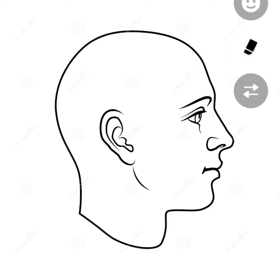For the surface marking of the parotid duct, we need two points. The first point is at the lower border of the tragus, and the second point is midway between the ala of the nose and the red margin of the upper lip. Now I am joining these two points.